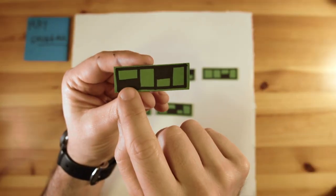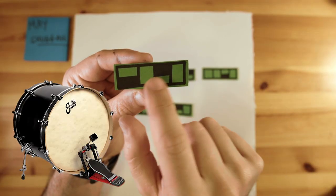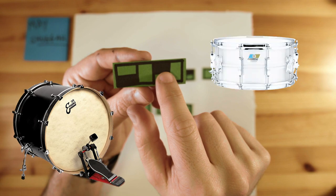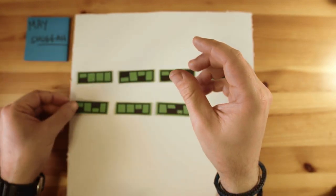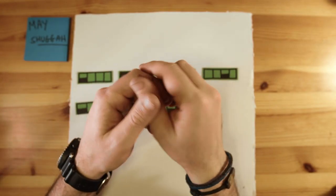By the way, the lower squares represent the kick drum, and the higher ones are the snare drums. The guitars play pretty much in unison with the drums, so this is how it's gonna be.